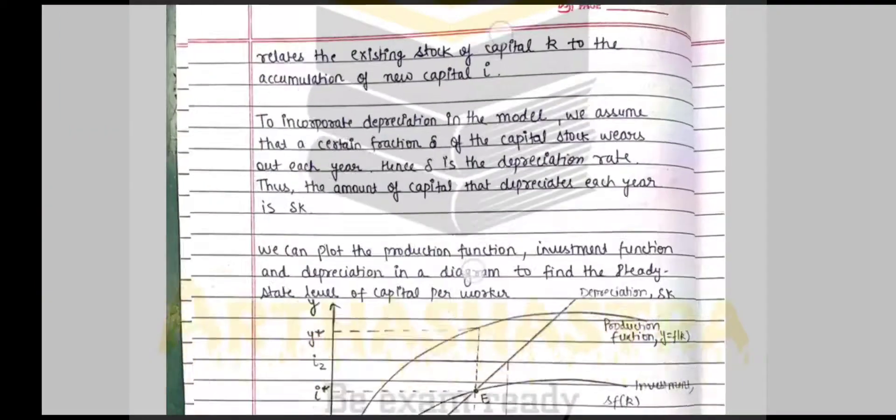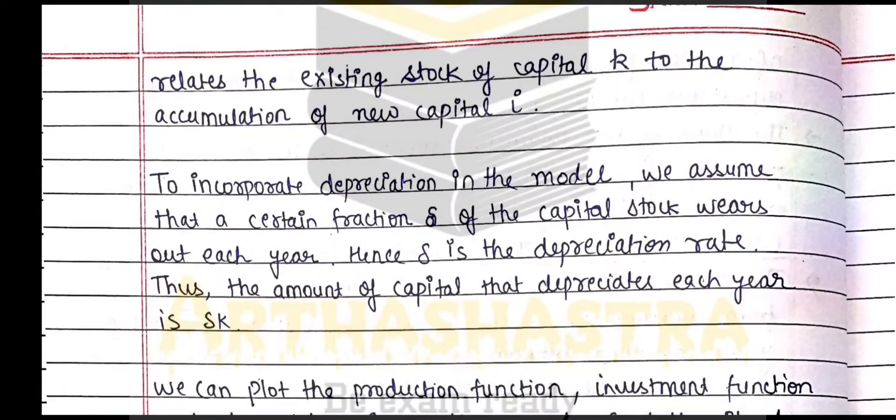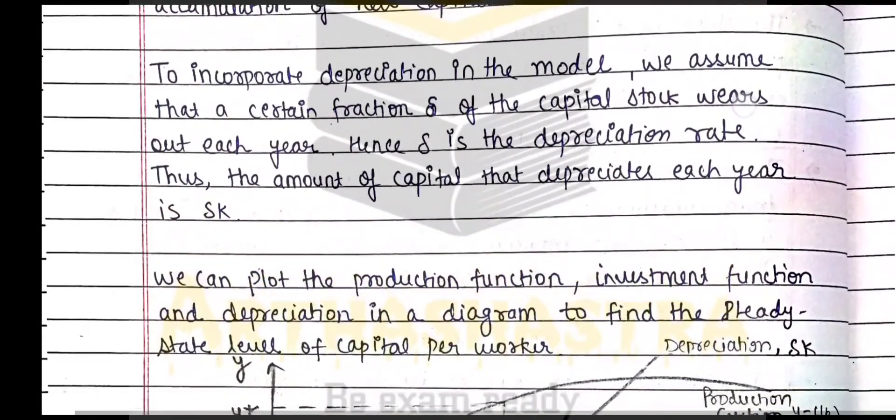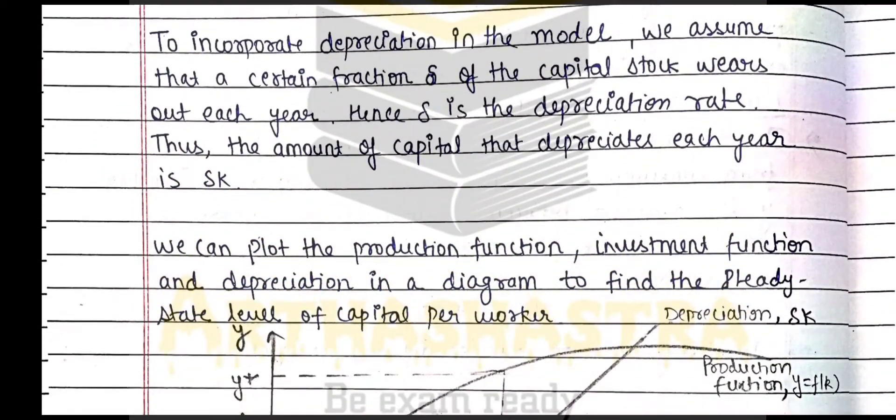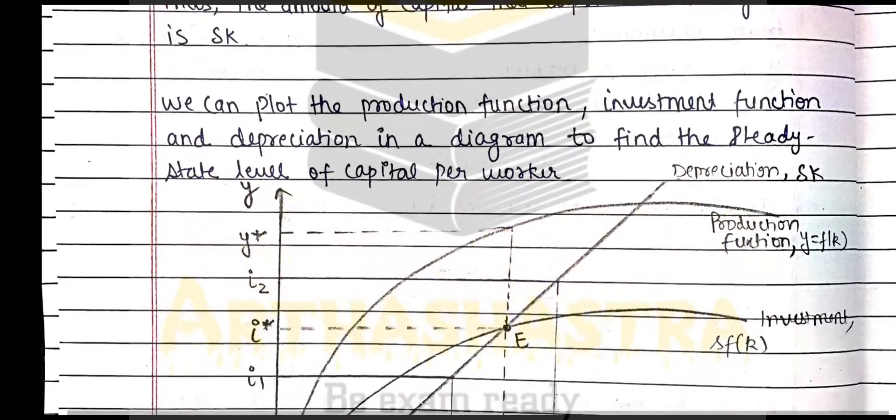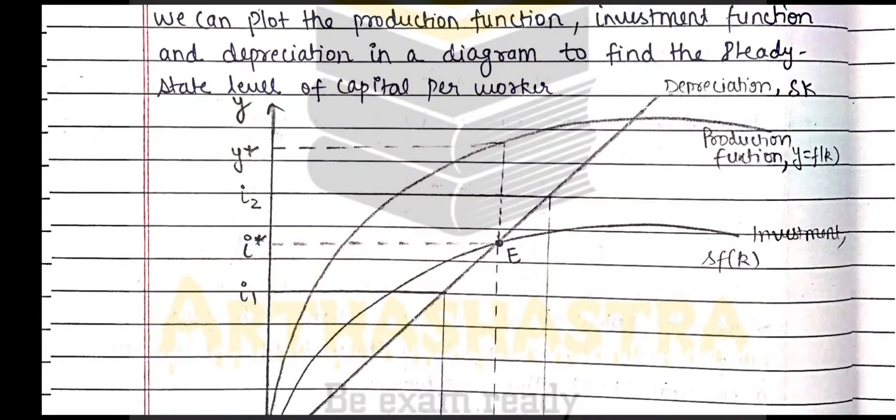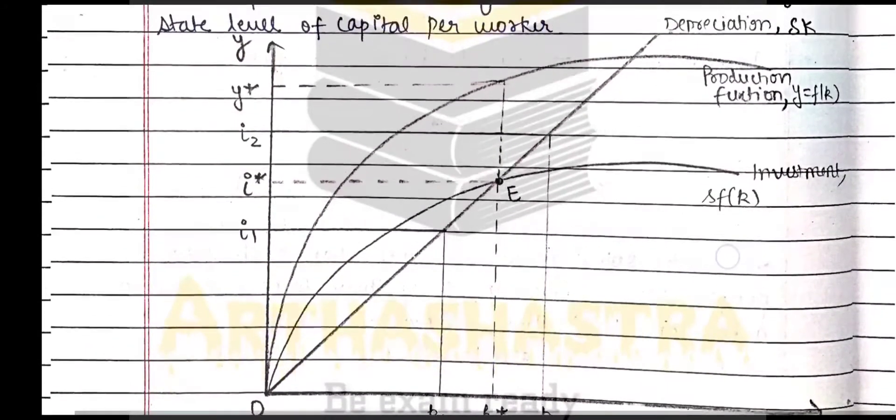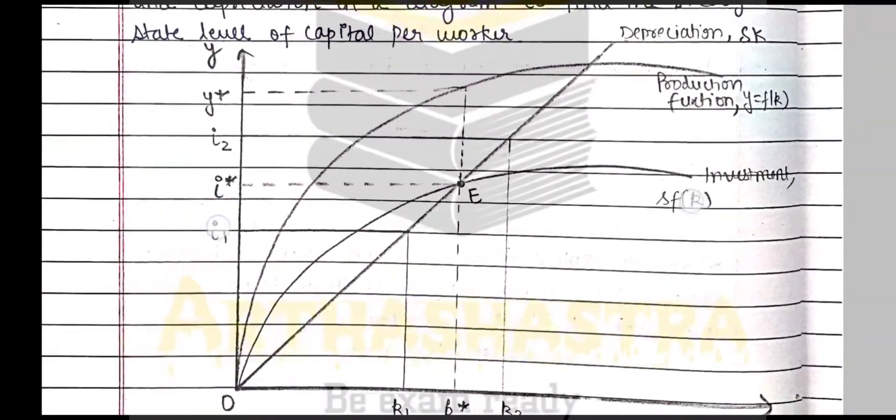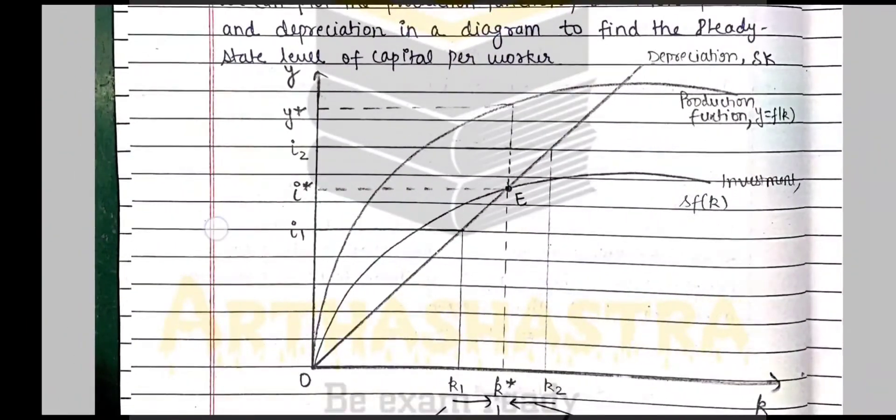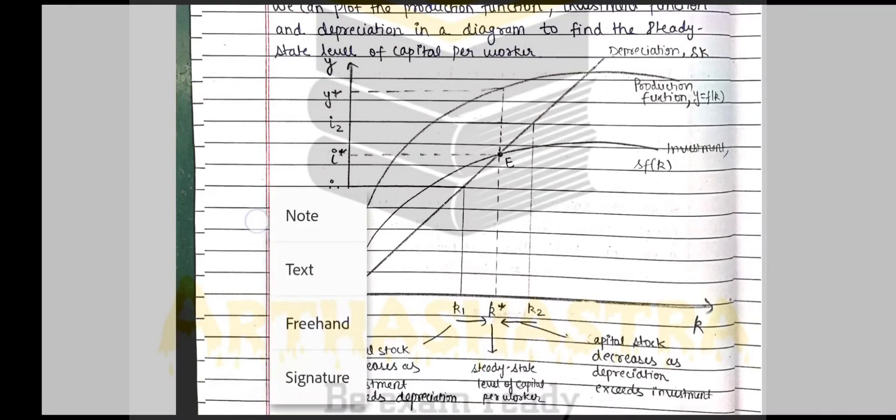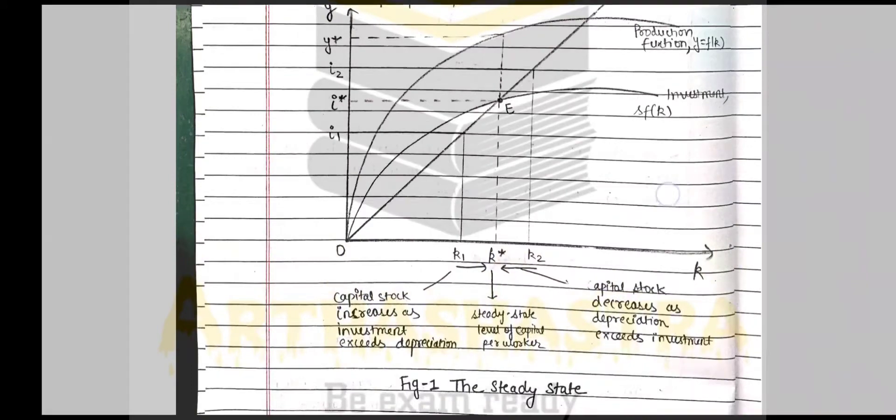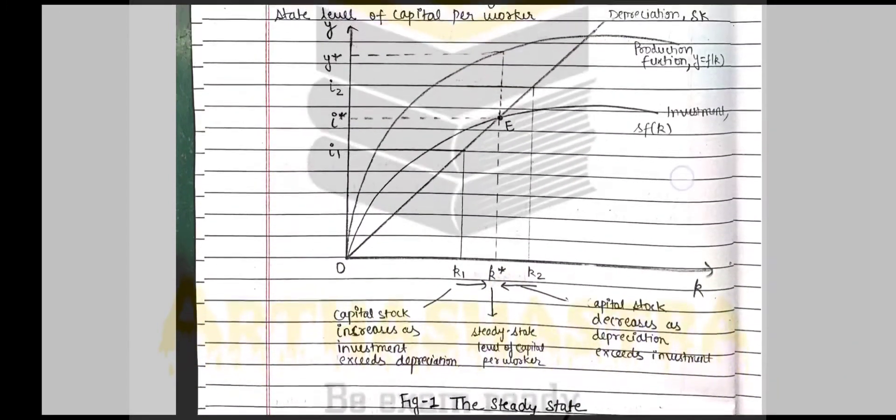Now we are incorporating depreciation in the model and we are showing it diagrammatically using the diagram. In the diagram we have production function, investment, and depreciation, the steady state level of capital per worker, and what happens if it deviates from the steady state. We have mentioned that also in the diagram.